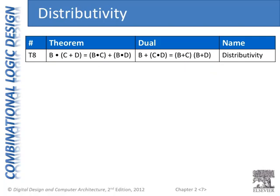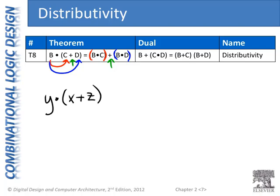The last theorem similar to typical algebra is distributivity. In the regular form, I can take B and distribute it across C OR D to get B AND C, OR B AND D. This is similar to regular algebra where Y times (X plus Z) equals Y times X plus Y times Z — distributing the factor across the sum.